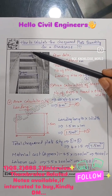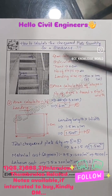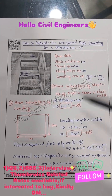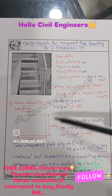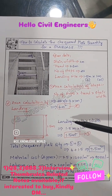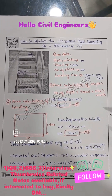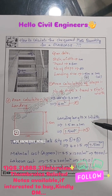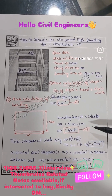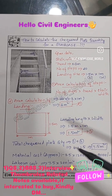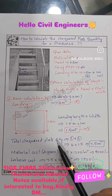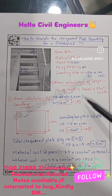Next, we calculate the area of the landing. The landing size given is 1.5 meter length and 1 meter width. So landing length × width = 1.5 meter × 1 meter = 1.5 square meters.